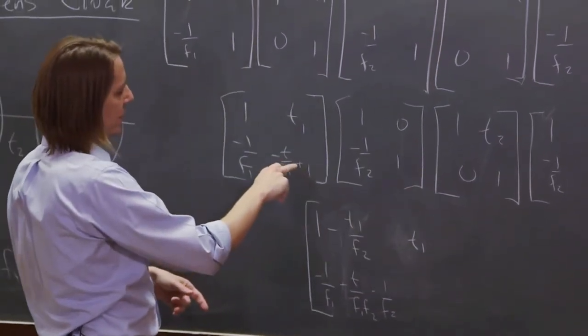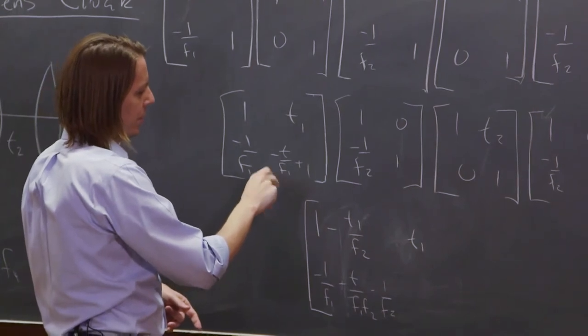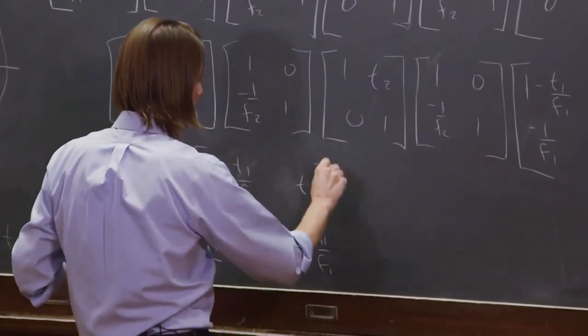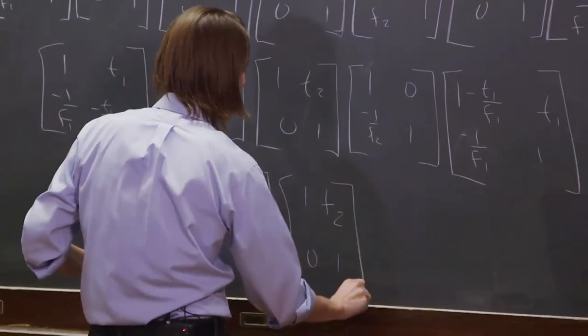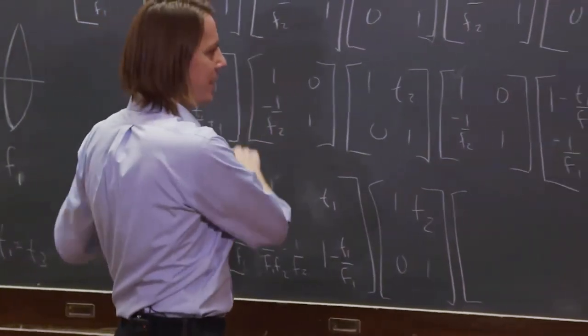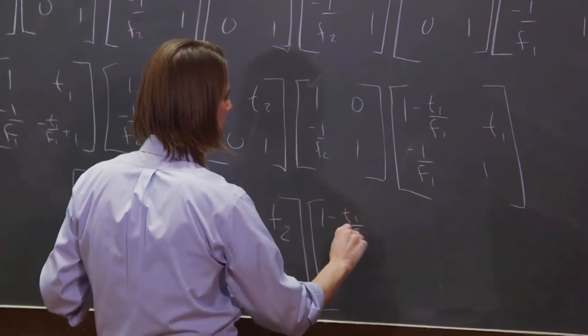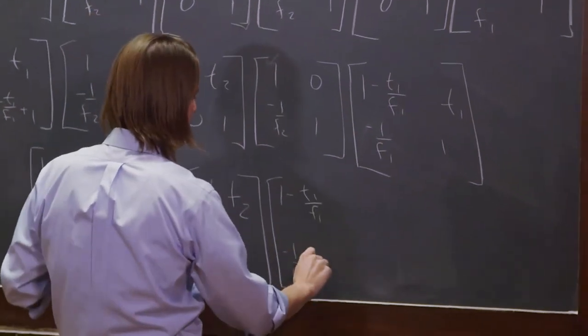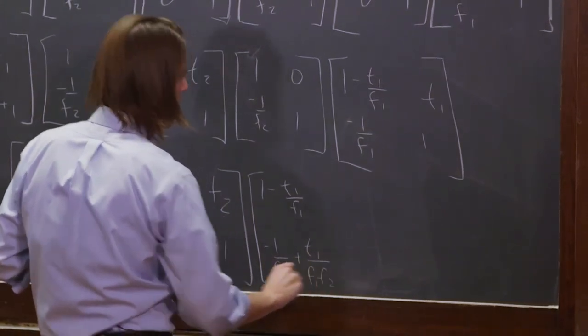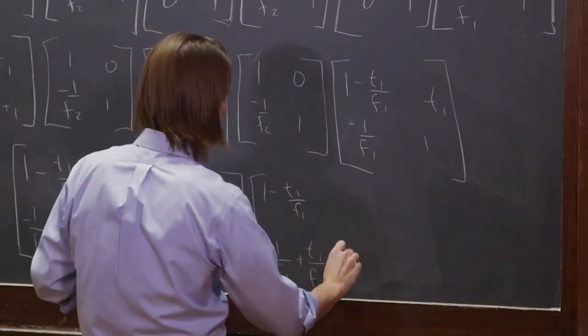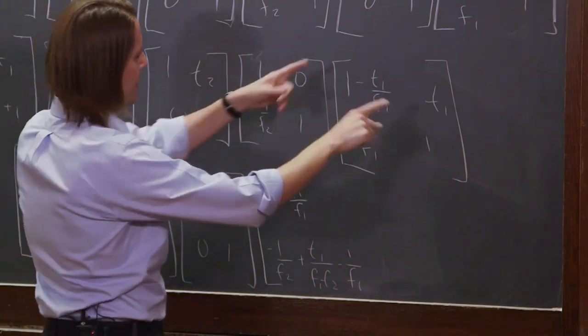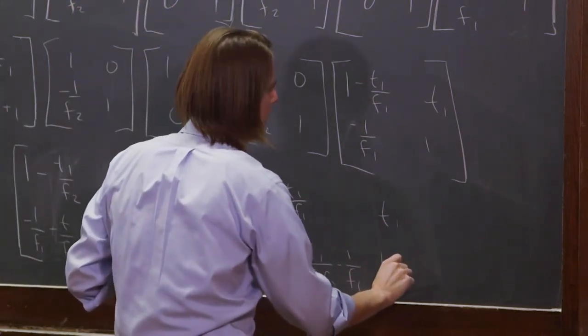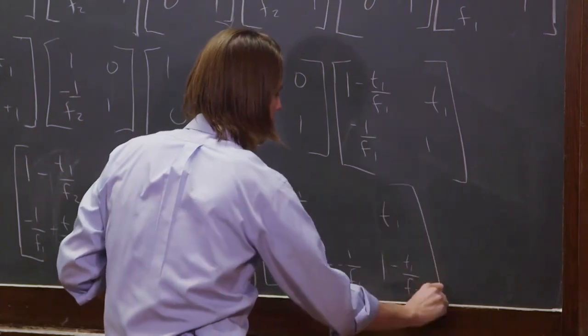And then finally, oh, goodness, let's see. So this is then 1 minus T1 over, that's a 1, I assume, 1 minus T1 over F1. And then 1, T2, 0, 1, and then this one, similar in complexity to this one, becomes 1 minus T1 over F1. And then down here is minus 1 over F2 plus T1 over F1 F2, minus 1 over F1. OK, that sounds familiar. And then, let's see, and then this becomes T1, and then this becomes 1 minus T1 over F2.